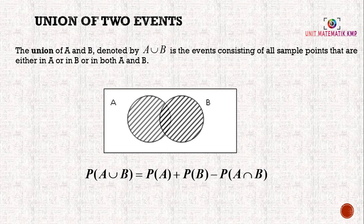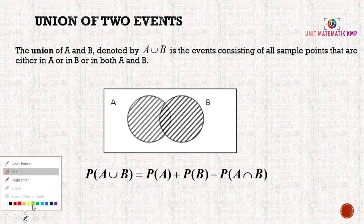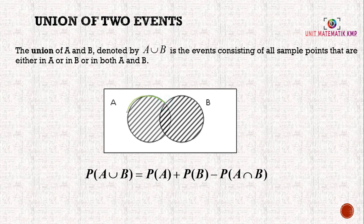The union of two events: the union of A and B, denoted by A union B, is the event consisting of all sample points that are either in A or in B, or in both A and B. So if we want to find the probability of A union B, we take P(A) + P(B) minus the intersection of A and B.